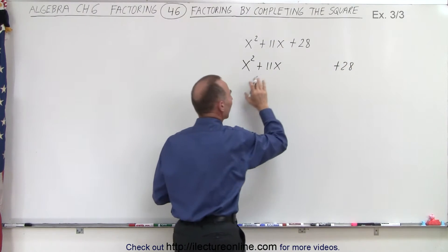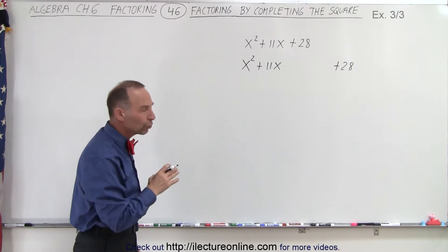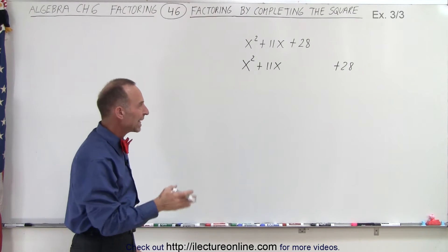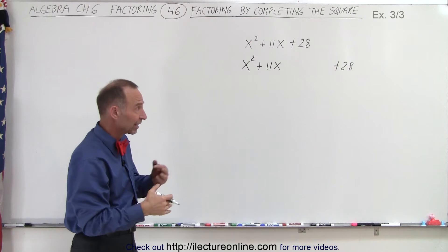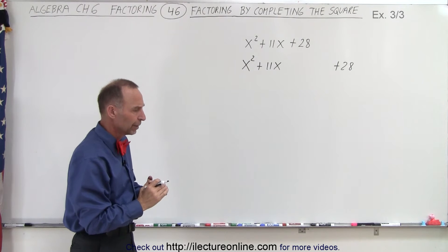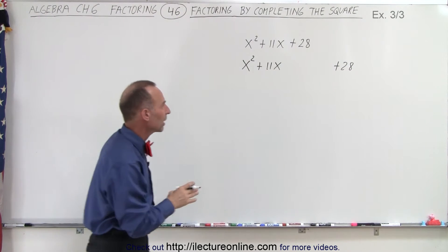The next step is to take half the middle term and square it, but since the middle term is an odd number, when we take half of that, we end up with a fraction that cannot be reduced to a single number. But don't let that scare you. We can still use the very same technique.